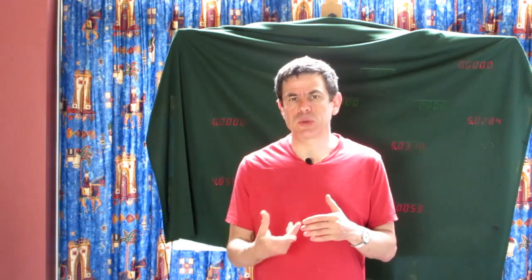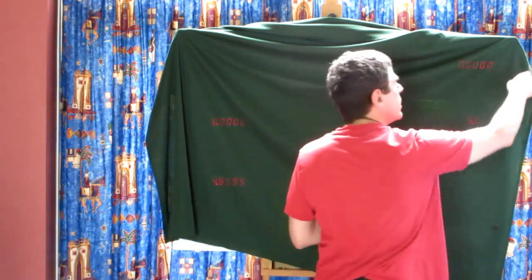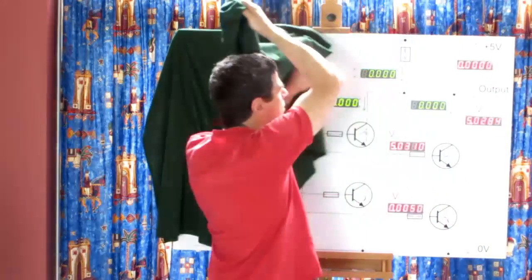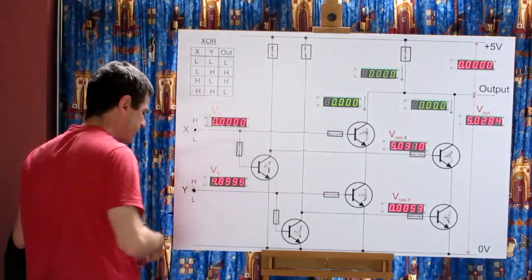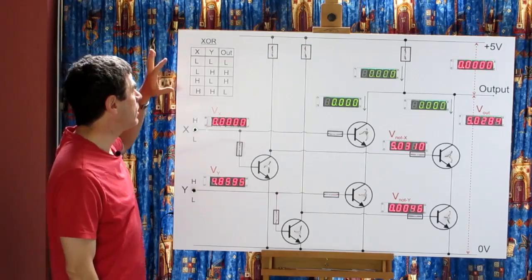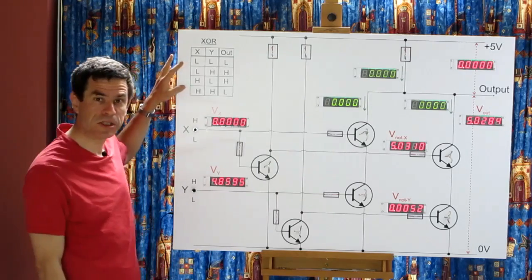So we're going to look at a circuit which combines those three methods together. The function we're going to look at is the exclusive OR function, which will be useful for when we look at arithmetic, which we'll be doing next. So here's the circuit. It's going to look a lot more complex than anything we've seen before, but it is stuff we've just seen before.